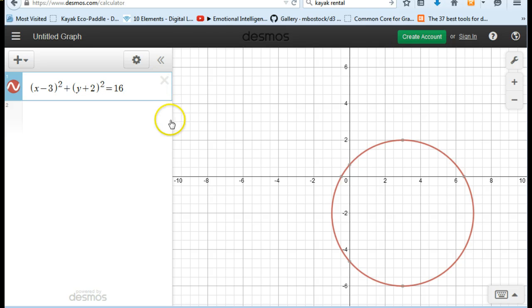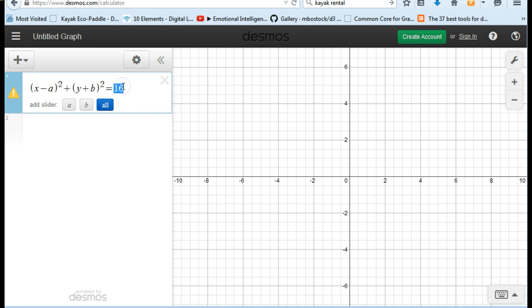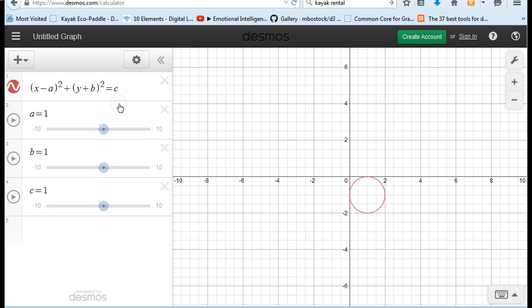If I want to play with this and figure out how it works, I can actually take letters, anything but x and y, and I can put them in the parts of the equation that had numbers. And by clicking all, I can create what are called sliders.